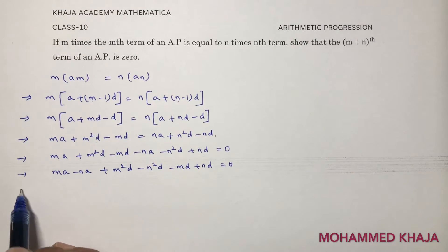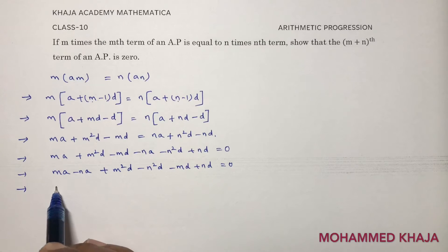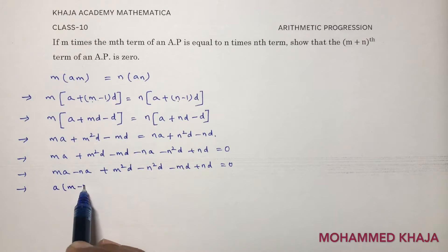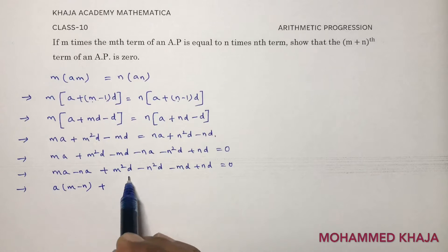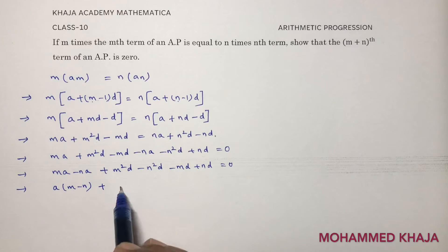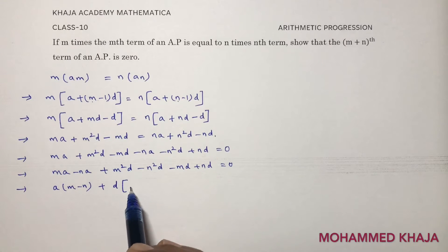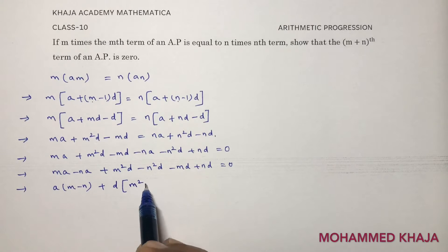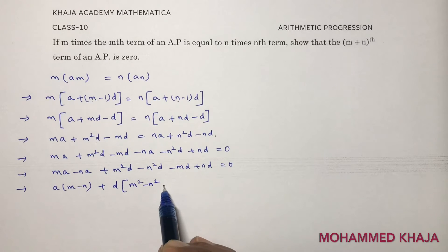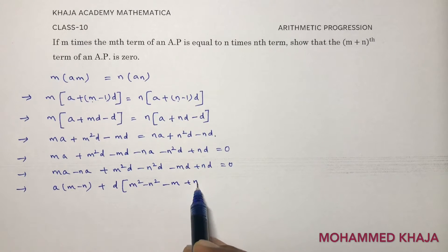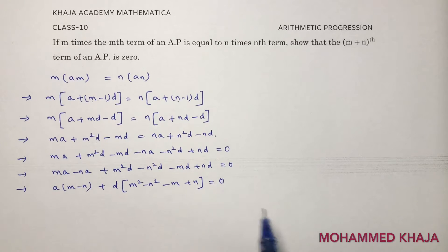Now, group the 'a' terms and the 'd' terms: (ma − na) + (m²d − n²d) + (−md + nd) equals 0. Taking 'a' common from the first two terms gives (m − n), and taking 'd' common from the remaining four terms leaves m² − n² − m + n equals 0.